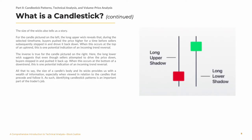The size of the wicks also tells us this story. For the candle pictured on the left, the long upper wick reveals that, during the selected timeframe, buyers pushed the price higher for a time before sellers subsequently stepped in and drove it back down. When this occurs at the top of an uptrend, this is one potential indication of an incoming trend reversal. The inverse is true for the candle pictured on the right. Here, the long lower wick suggests that even though sellers attempted to drive the price down, buyers stepped in and pushed it back up. When this occurs at the bottom of a downtrend, this is one potential indication of an incoming trend reversal. All that to say, the size of a candle's body and its wicks provides us with a wealth of information, especially when viewed in relation to the candles that precede and follow it. As such, identifying candlestick patterns is an important part of the trader's job.